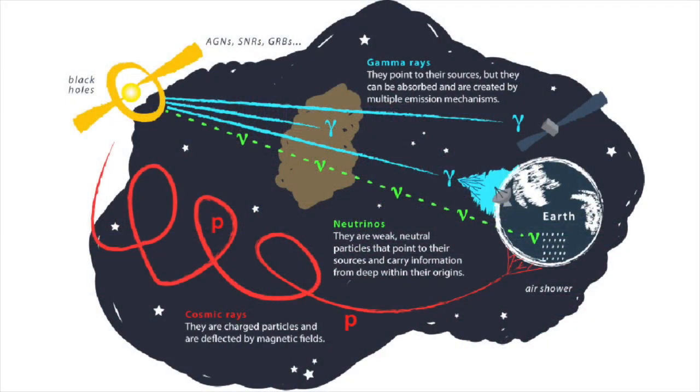Neutrinos are formed in the same high energy environments in the universe that also give rise to cosmic rays. The origin of many cosmic rays is still an unresolved problem in astrophysics. Because they're charged, their paths are scrambled by magnetic fields as they travel across space, so it's often impossible to pin down where they came from.